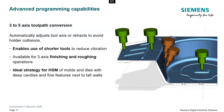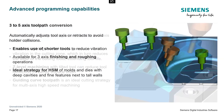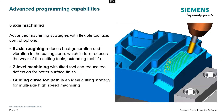This toolpath resembles a traditional fixed-axis toolpath. The system constantly looks ahead for tool holder collisions. When none is encountered, a 3-axis toolpath is output. When a potential collision is anticipated, the tool axis is gradually tilted away from the collision area, resulting in a 5-axis toolpath. NX CAM has established 5-axis capabilities longer than most other systems.